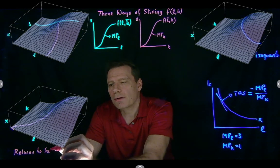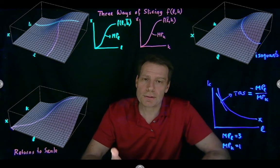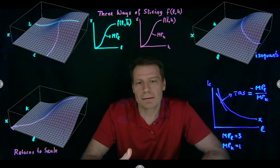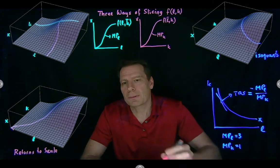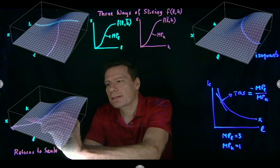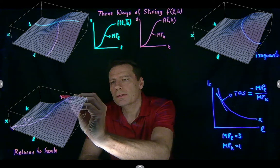As we vary both outputs together, is output increasing at a faster rate or at a slower rate than what we're varying the inputs together? And so we identified this initial part as increasing returns to scale and this later part as decreasing returns to scale.